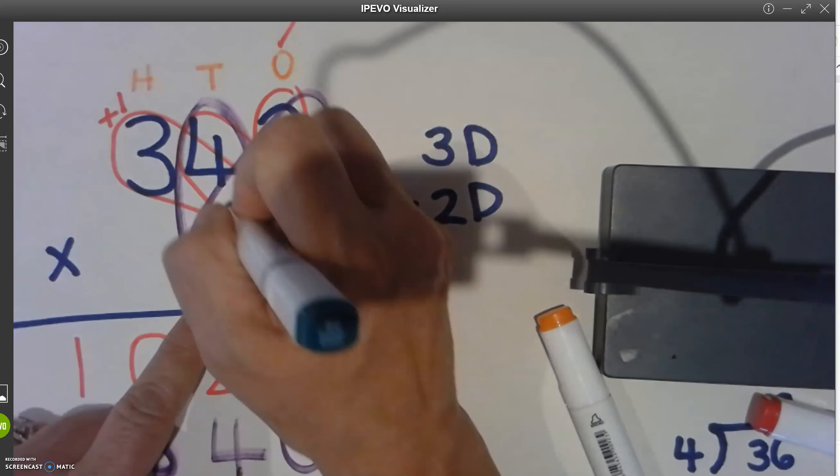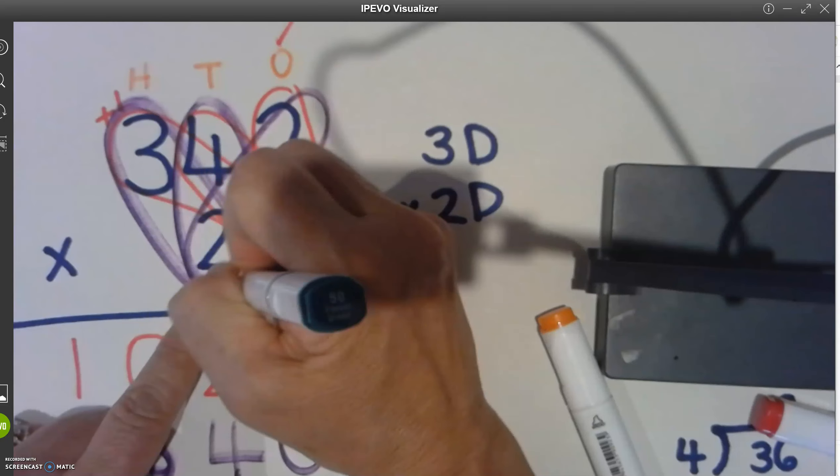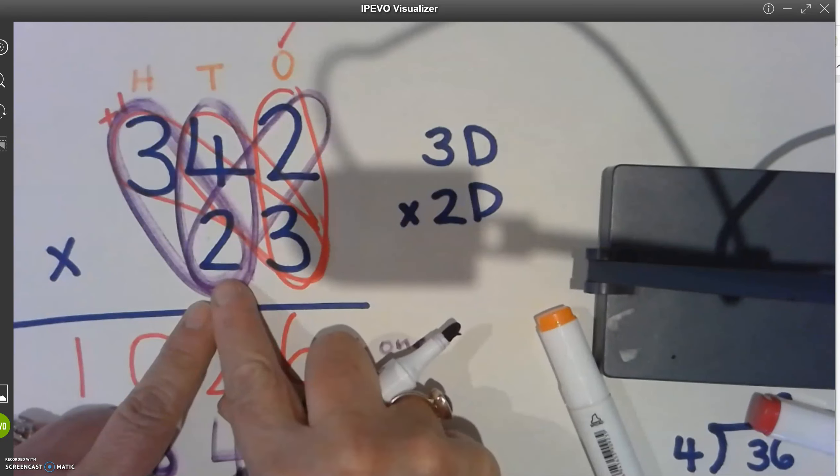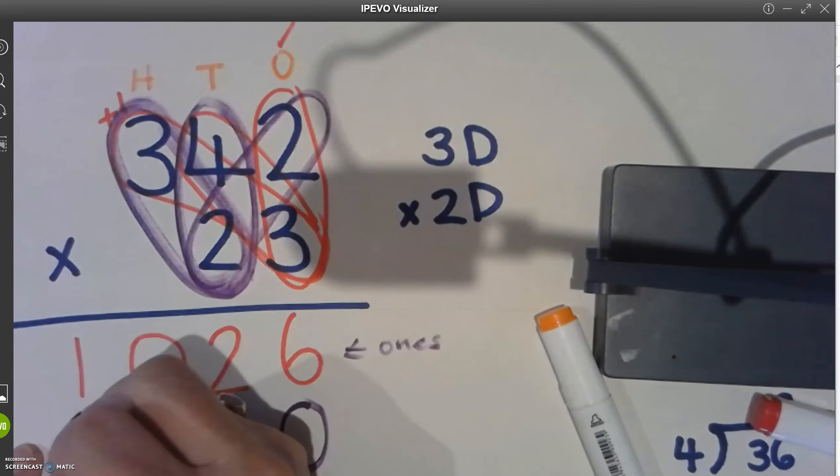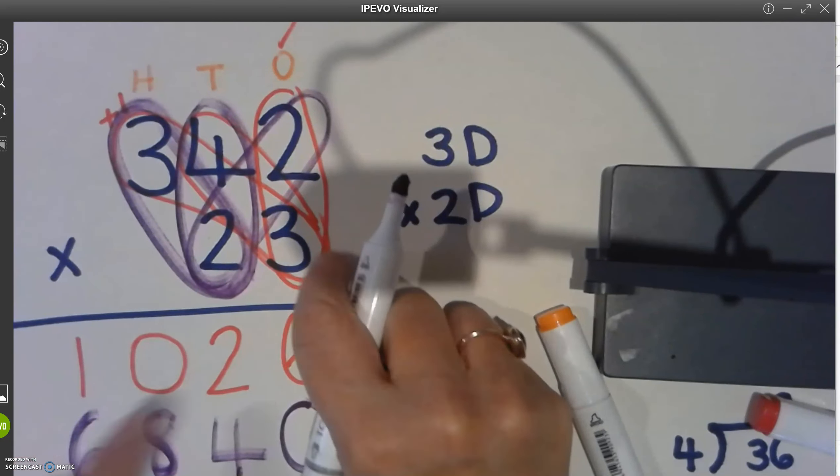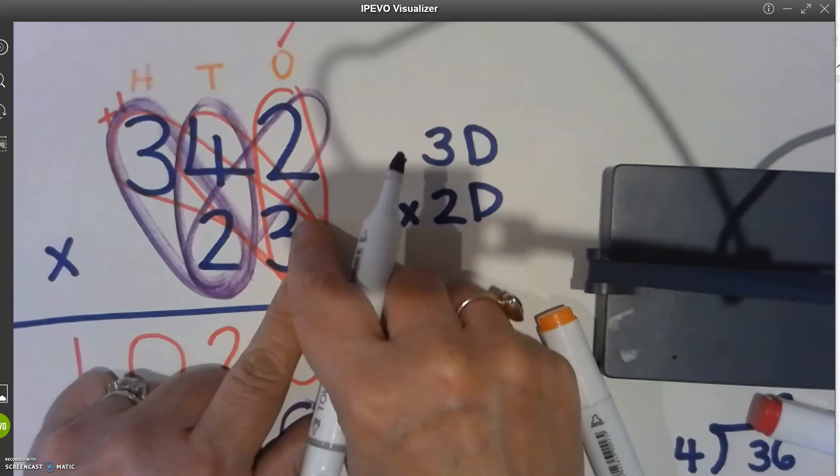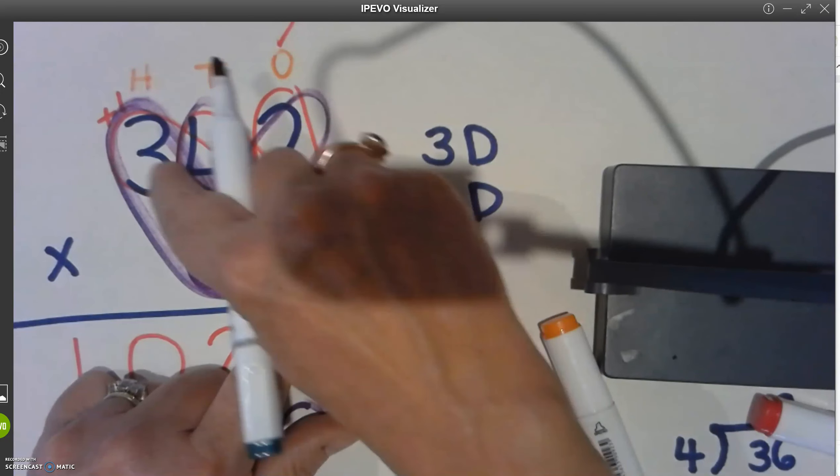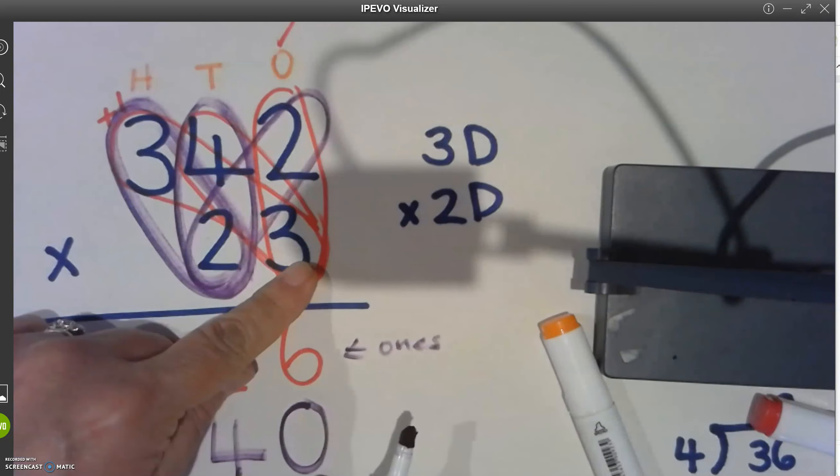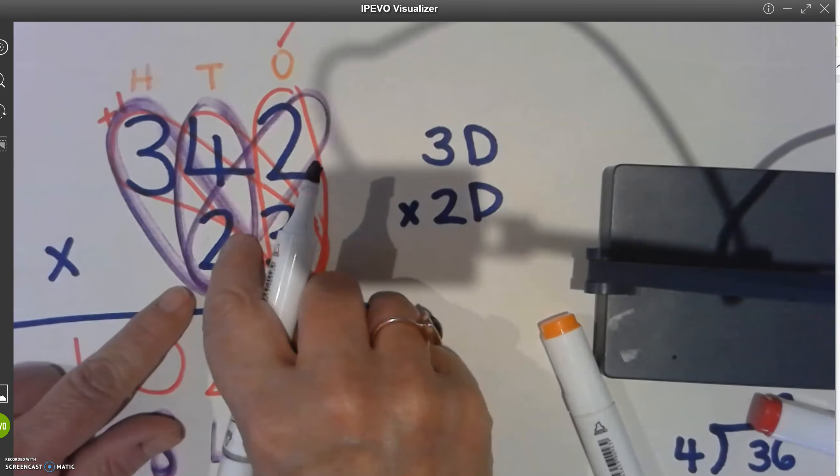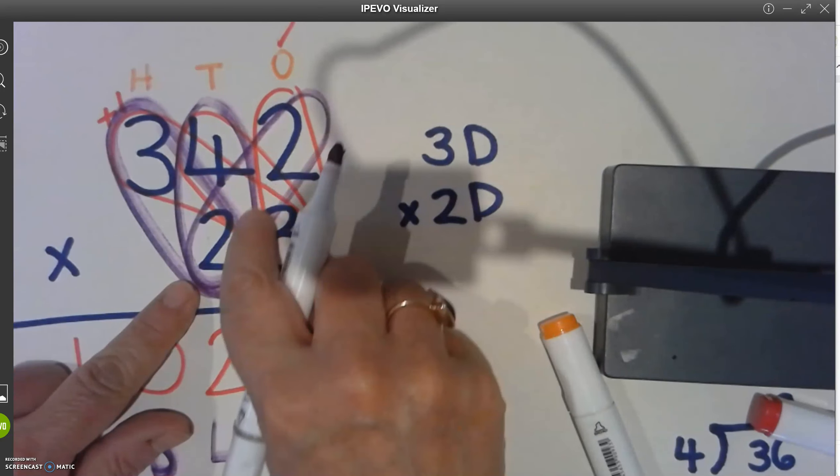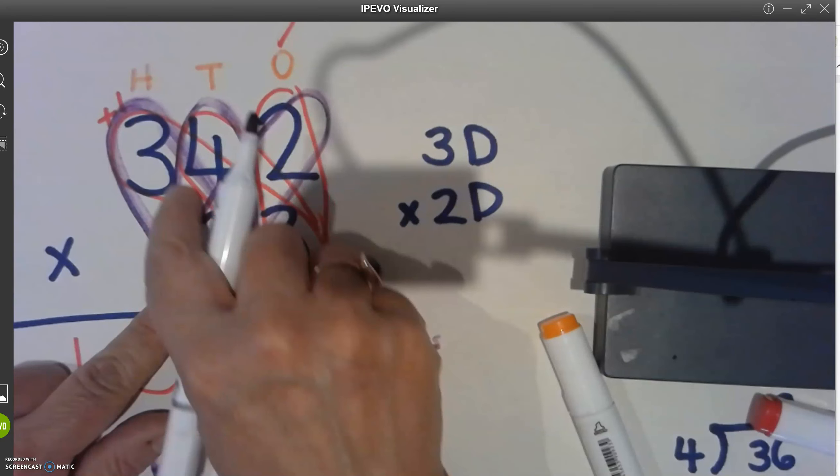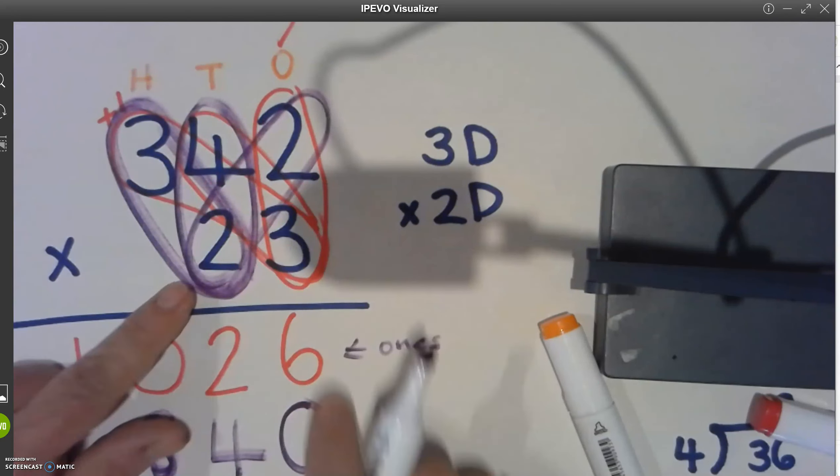And the last one, three multiplied by two is six. So for our ones, three. Then magic zero. And then for our tens, one, two, three. Okay.